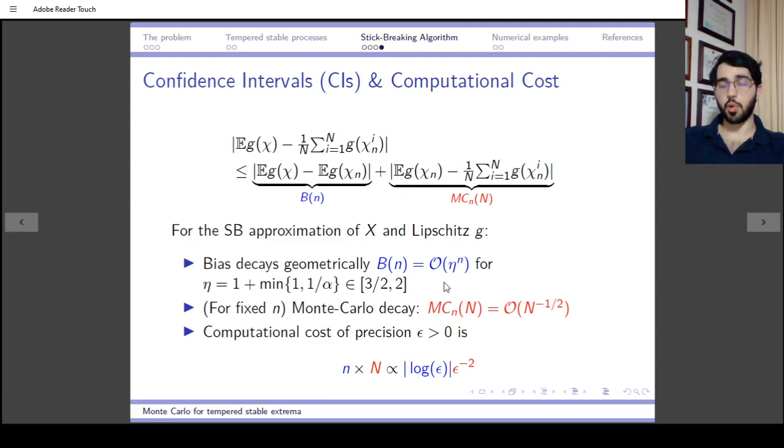We need to control two things. First is the bias, which I've already stated is geometrically small, and second is the Monte Carlo error, something you can never avoid if you use Monte Carlo.